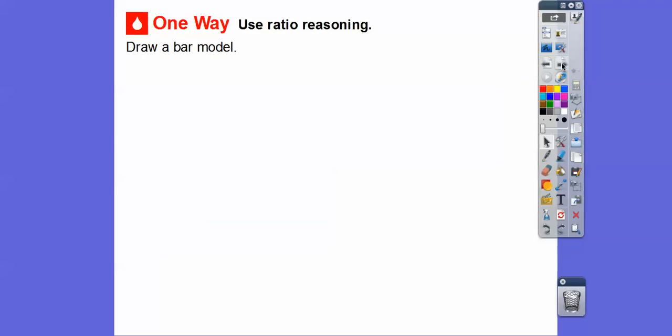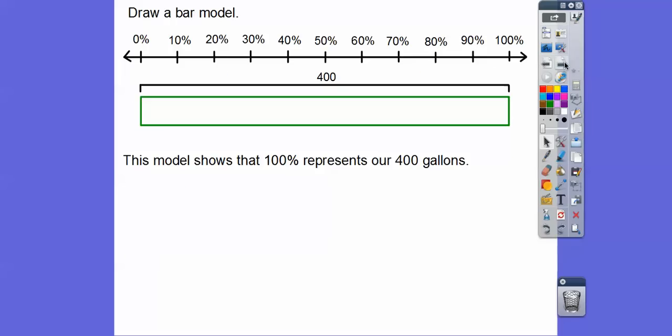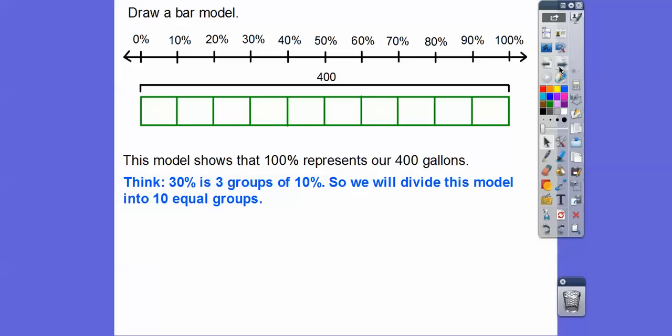Here's one way we can use ratio reasoning: we can draw a bar model. Here's our 400 gallons right here in this bar. This 400 gallons shows our 100%, from zero to 100 percent. So 30% is three groups of 10%. So we can divide this model into 10 equal groups. There's 10 equal groups - 10%, 10%, 10%, all the way up to our 100%. Let's find the value of 10% of 400.